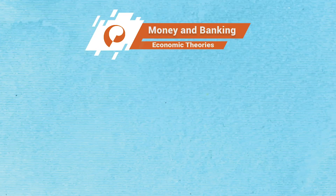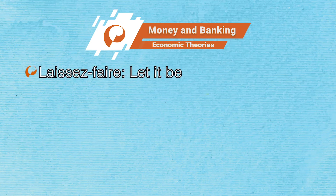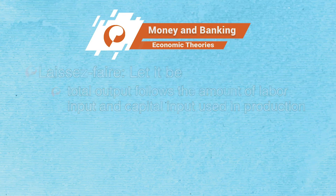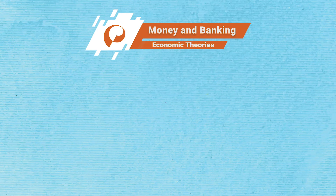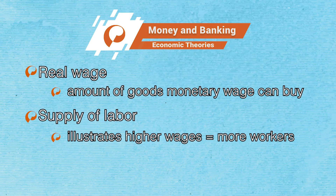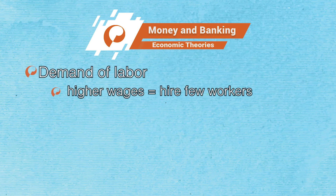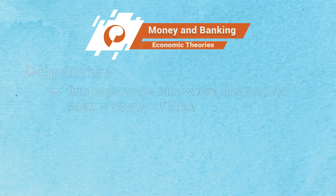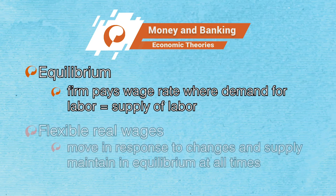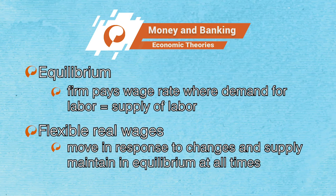Classical economists believe the economy is self-regulating and advocate for a laissez-faire — let it be — approach to economic policy. According to the classical model, total output follows the amount of labor input and capital input used in production. These amounts are determined in highly competitive markets where flexible prices absorb any change in demand or supply. In the labor market, workers' and firms' decisions are driven by the real capital wage — the amount of goods the monetary wage can buy. The supply of labor is an upward sloping line, illustrating that at higher wages more people are willing to work. The demand for labor is a downward sloping line, illustrating that at higher wages, firms have lower profit margins and hire fewer workers. The market is in equilibrium when firms pay the wage rate where the demand for labor equals the supply of labor. Flexible real wages maintain the market in equilibrium at all times.